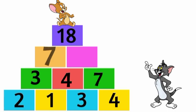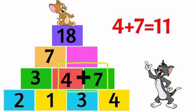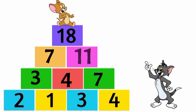Again, Tom is taking 4 plus 7. 4 plus 7 equal to 11. So, here is 11. See, now Tom has filled third line boxes.